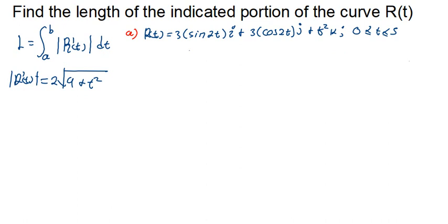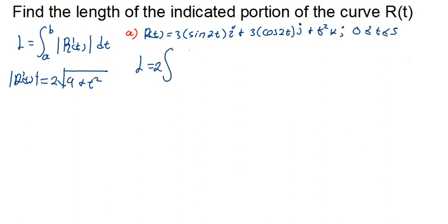Now let's determine the integral. Our L equals the integral from 0 to 5 of 2√(9 + t²) dt. I can put the 2 outside, giving us L = 2 times the integral from 0 to 5 of √(9 + t²) dt. Here I can use a trig substitution.